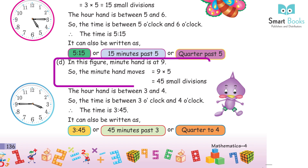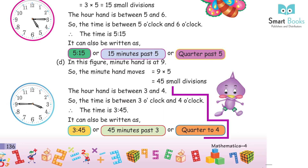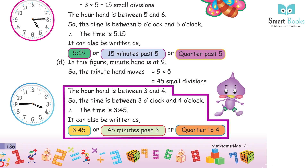D: In this figure, the minute hand is at 9. So the minute hand has moved 9 × 5 = 45 small divisions. The hour hand is between 3 and 4. So the time is between 3 o'clock and 4 o'clock. The time is 3:45. It can also be written as 3:45, 45 minutes past 3, or quarter to 4.